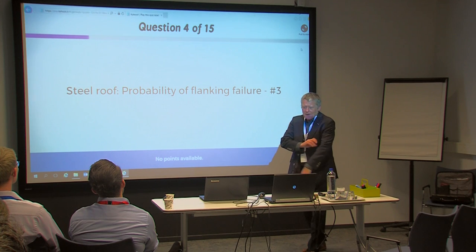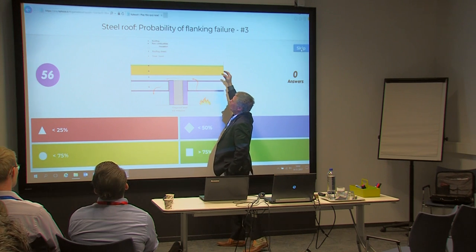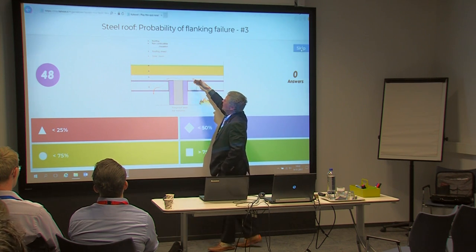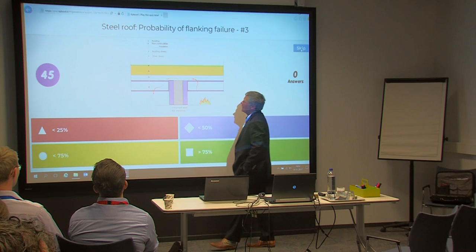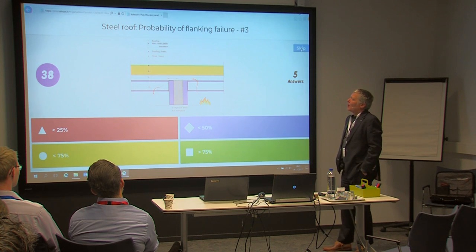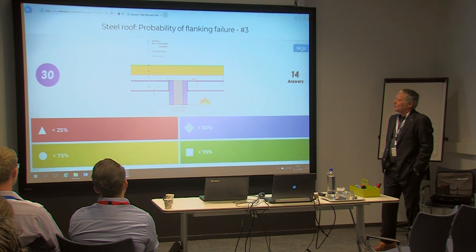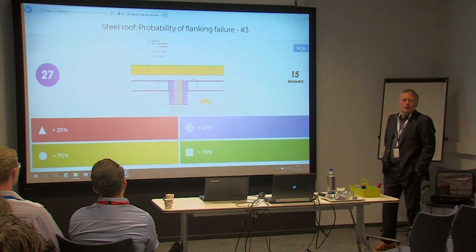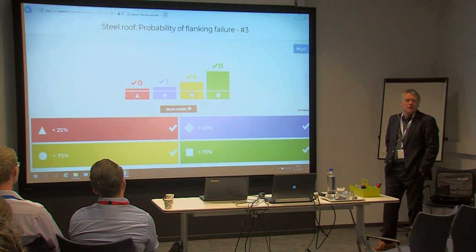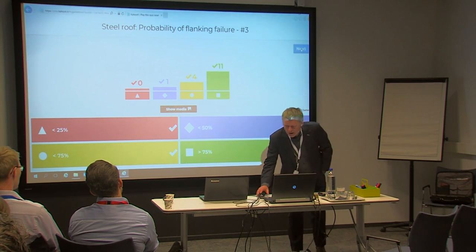Another roof detail: a situation where non-combustible layers are used but the profile steel plate goes over the compartment wall, allowing possible convective heat transport. The four intervals are 0–25%, 25–50%, 50–75%, and 75–100%. Results show the group assigns a much higher failure probability in this case, which seems expected.